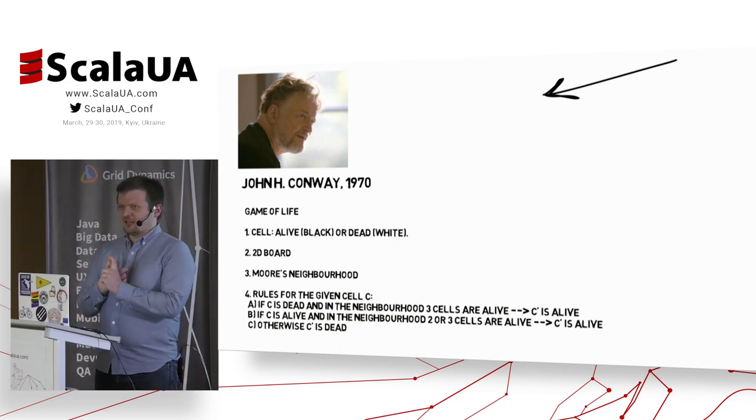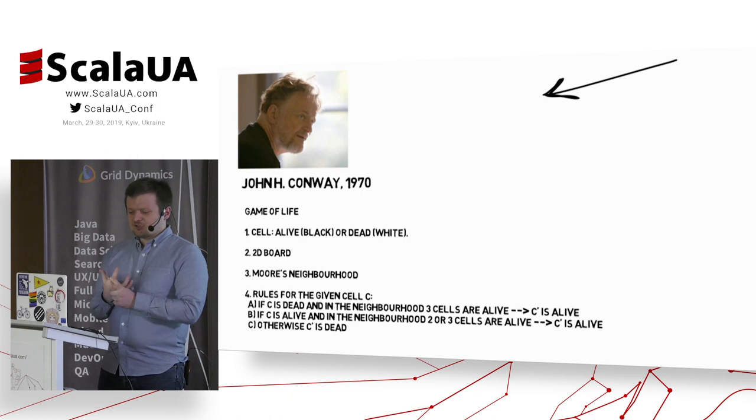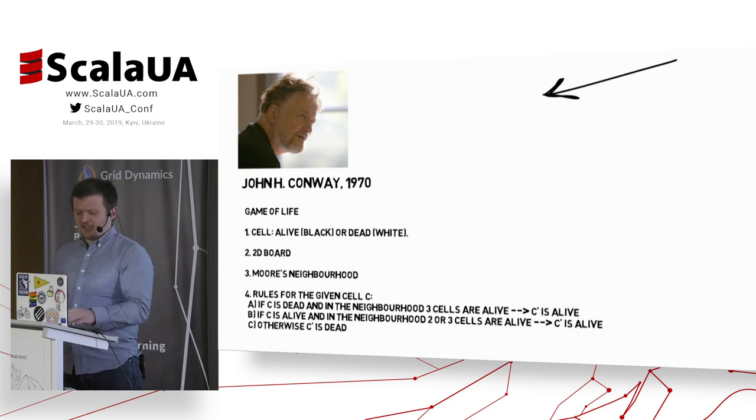So we have a cell that can only have one field, and this is the state if the cell is alive, so it's black if it's alive, or it's white if it's dead. The board is two-dimensional, and the neighborhood is Moore, so that means that all eight cells around it are the neighborhood.